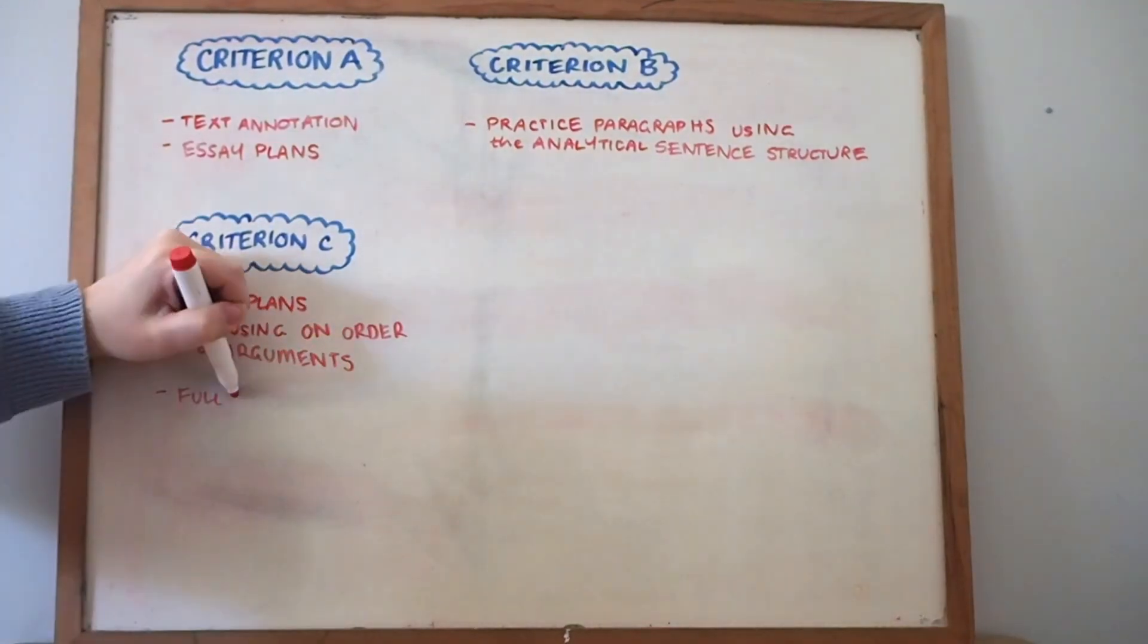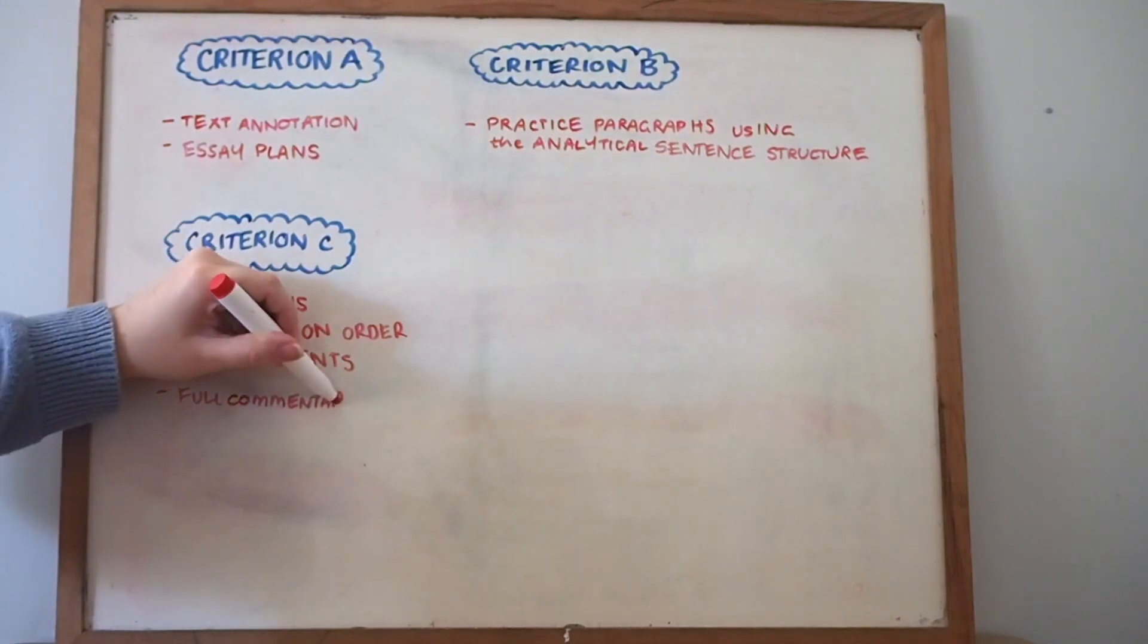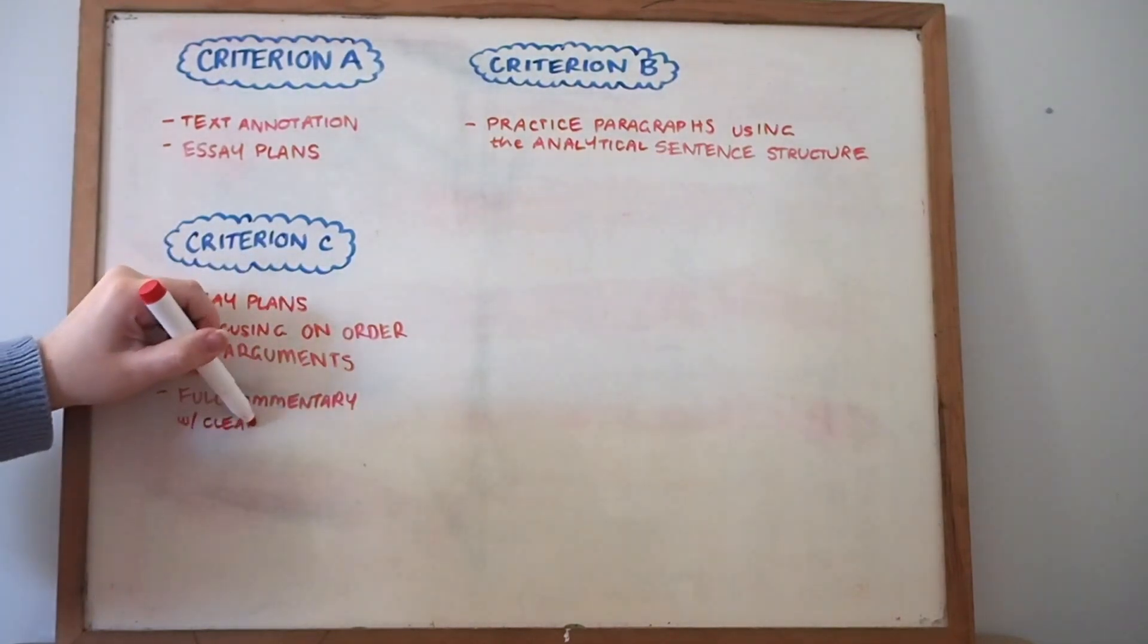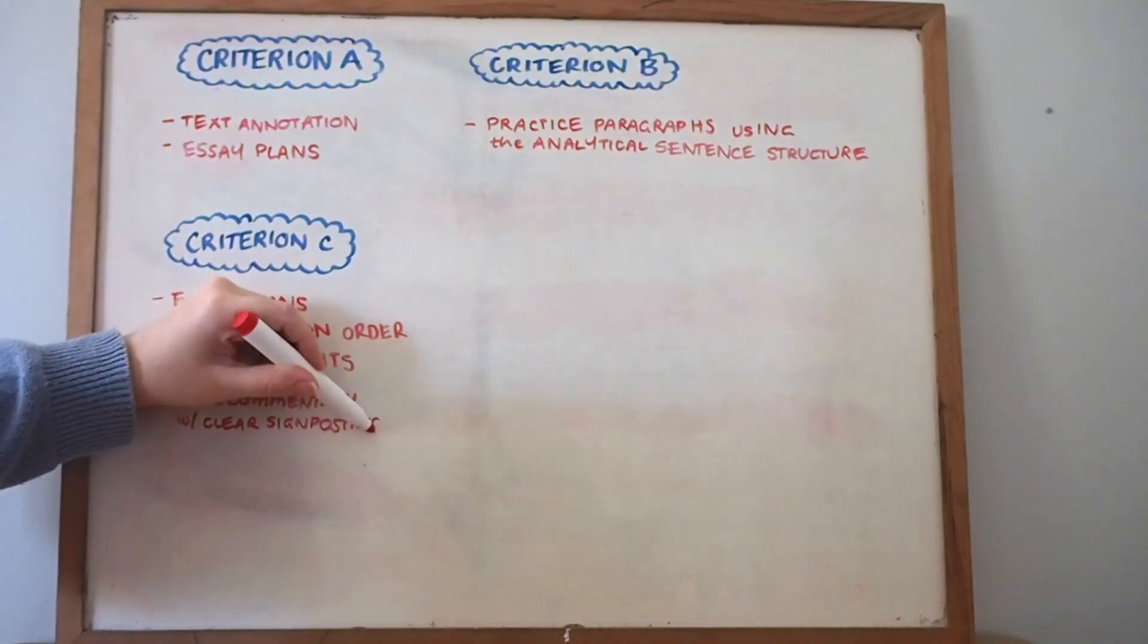And then the second exercise is the writing of a full commentary but really placing emphasis in your mind on clearly signposting your arguments. So this means having a really clear thesis that you return back to and link to at the beginning of every paragraph and at the end of every paragraph, as well as at the end of every analytical sentence structure when you get to that meaning part, having some key words from your thesis in order to continually have that link back to your central argument.